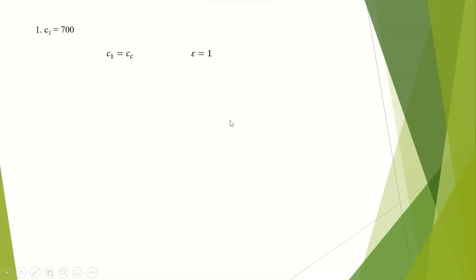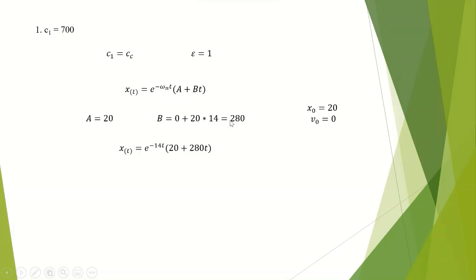In the first case, the system is critically damped because the damping constant equals the critical damping coefficient. For the displacement equation, A equals x zero and B equals v zero plus omega n times x zero. Substituting the values, we get A equals 20 and B equals 280. So x as a function of time equals (20 plus 280t) times e to the power of minus 14t.